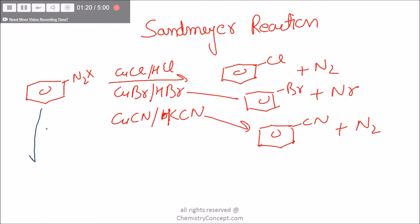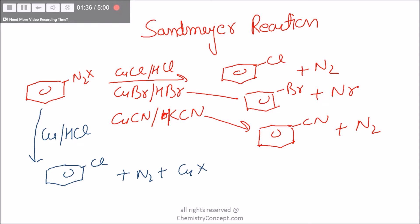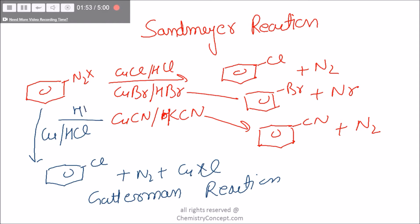With a slight modification, if we react the Diazonium salt with copper in the presence of HCl, we get chlorobenzene plus nitrogen plus CuCl. If we use HBr, we get bromobenzene plus nitrogen plus CuBr. This reaction is called the Gattermann reaction.